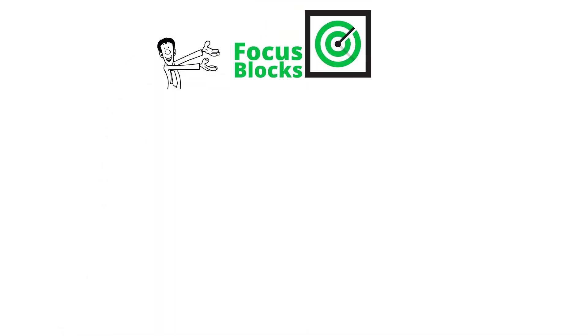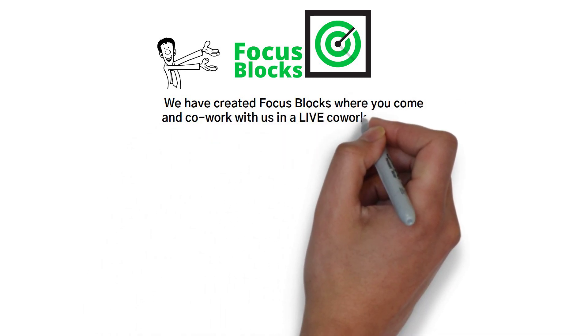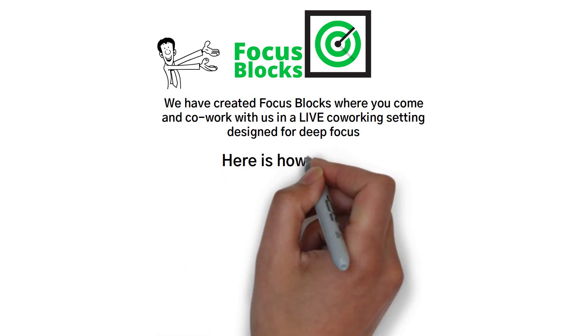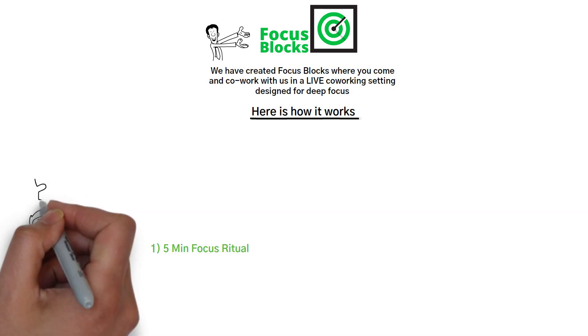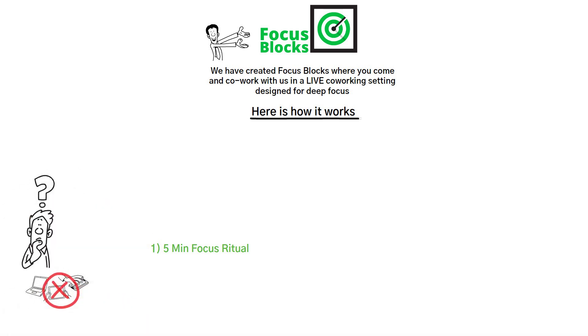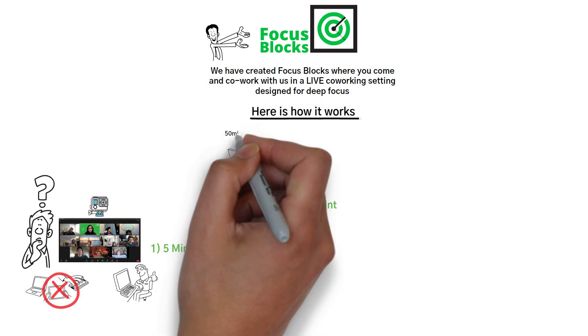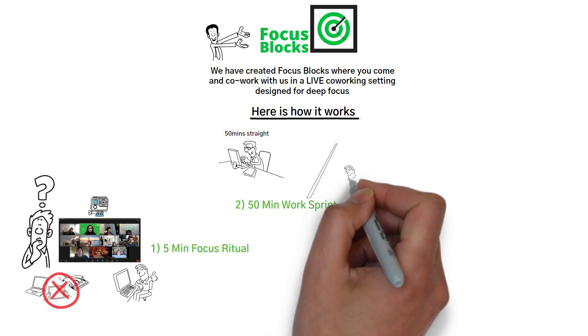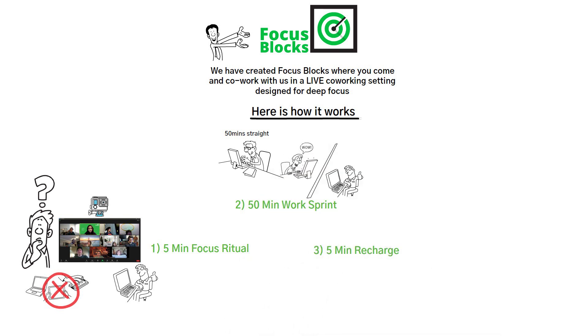Welcome to Focus Blocks. We have created Focus Blocks where you come and co-work with us in a live co-working setting designed for deep focus. And here is how it works. First of all, we begin by helping you identify your most important tasks that you need to focus on. Then we ask you to turn off all distractions. And as it is live room with a focus guide and everyone's camera is on, you turn off all distractions and notifications and work on your most important tasks for the next 50 minutes straight. And then we end that work session and we ask you to reflect on your progress and share it with the group. And then we take a break to meditate, to relax, recharge. And then we do this all over again.